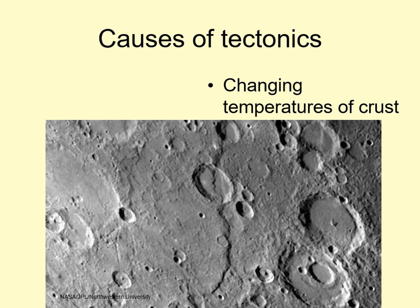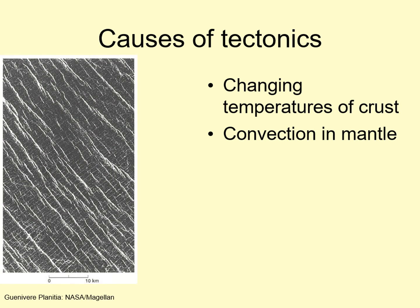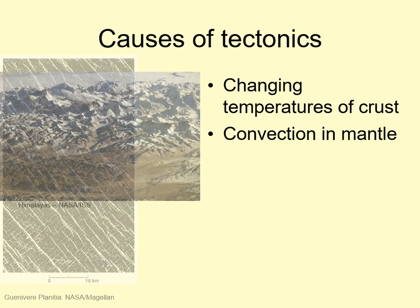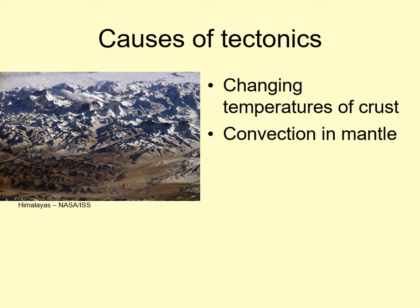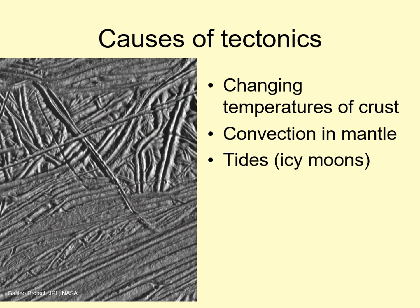Another way that internal heat can drive tectonics is through convection in the mantle. When the hot convective flow moves upward, it spreads apart, pulling the crust with it. Similarly, when the flow sinks down into the mantle, the crust compresses, building up mountain ranges. We'll look at this more when we discuss plate tectonics on Earth. Finally, a third way to generate tectonics is through tides. The repeated flexing and squeezing associated with tides on a moon can generate heat, and these same stresses can cause repeated parallel ridges and valleys — a pattern we see on several outer solar system moons, such as Jupiter's Europa.